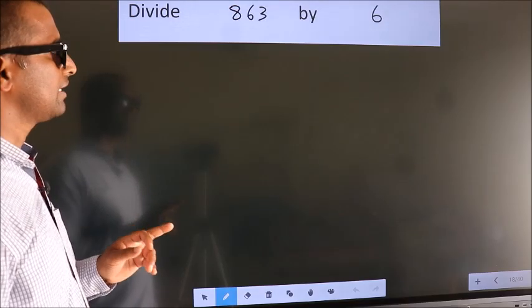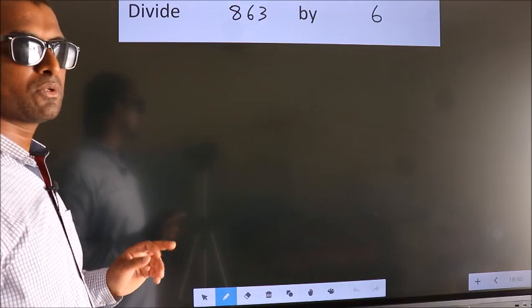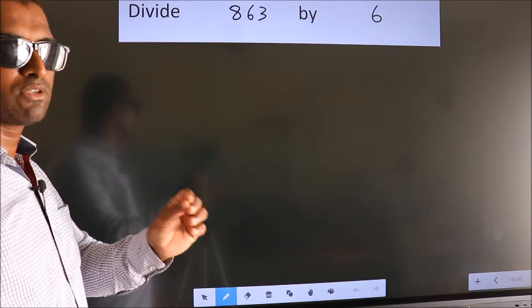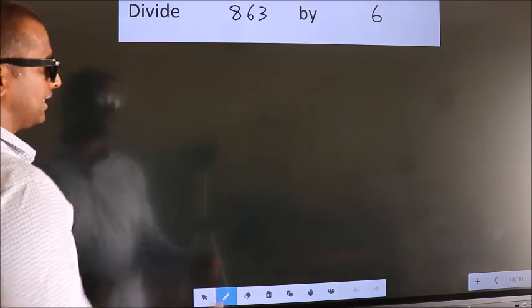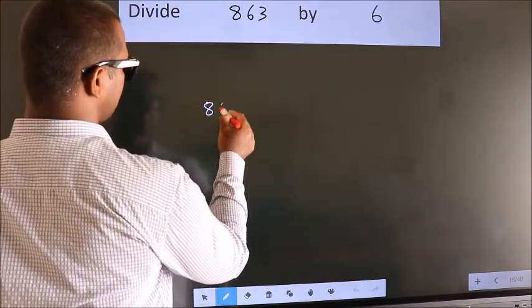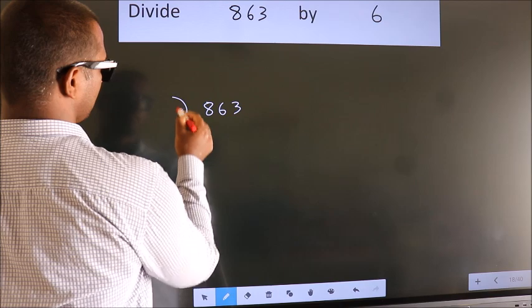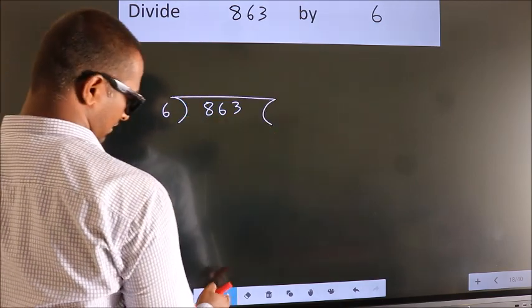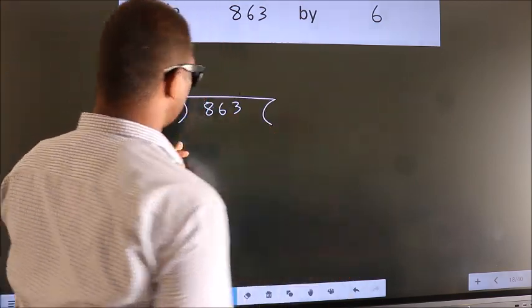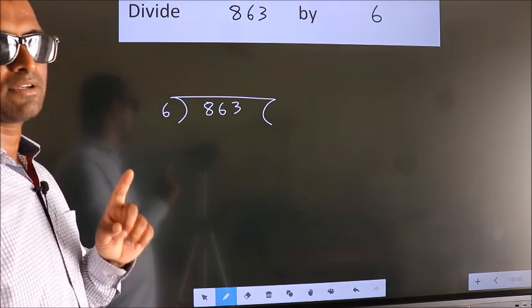Divide 863 by 6. To do this division, we should frame it in this way: 863 here, 6 here. This is your step 1.